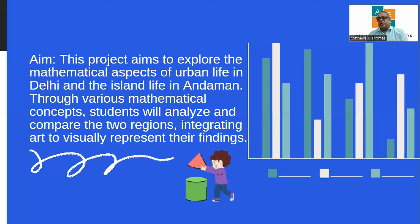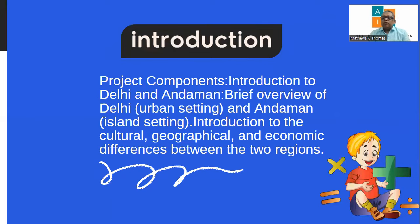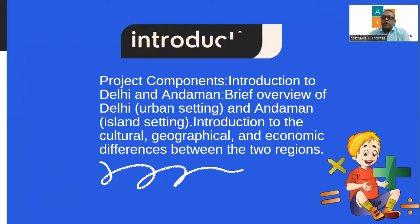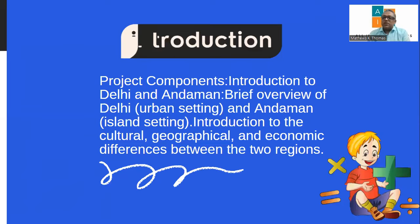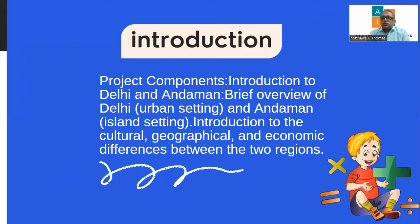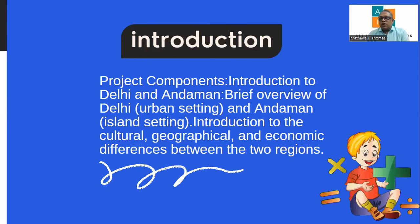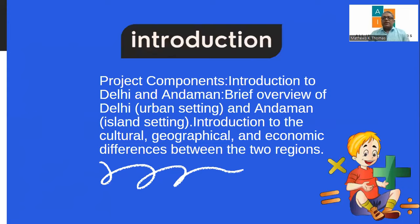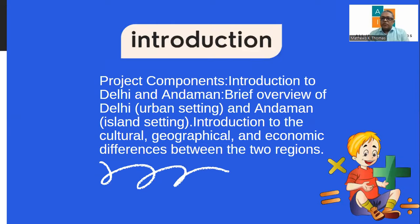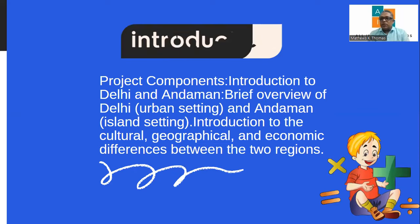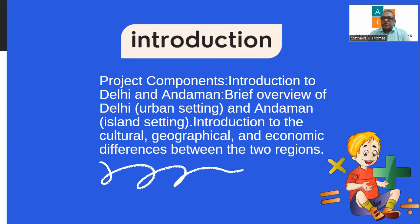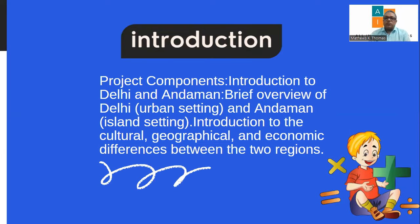So this is the aim of the project: exploring the mathematical aspects of urban life in Delhi and island life in Andamans. The introduction will introduce Delhi as the urban place and Andamans in the island setting. We need to give a brief description about the two places — regarding the culture, dance forms, handicraft, geographical position, and economic differences. You can write about Delhi first and Andamans later, or vice versa — about 100 to 200 words describing the main aspects of both places.